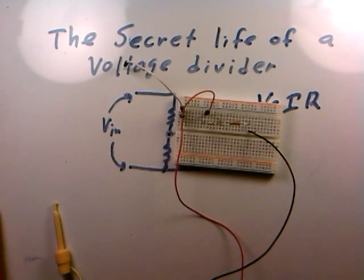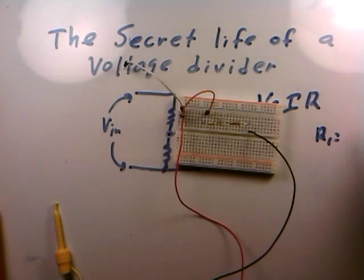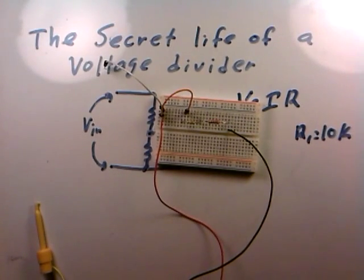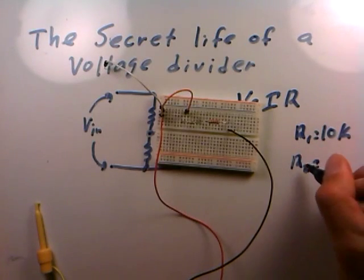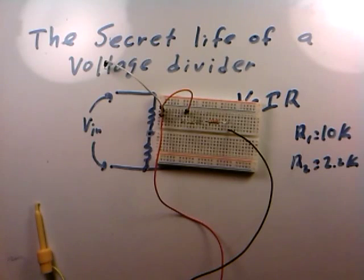Resistor one is a 10k—brown, black, orange band—so my R1 equals 10k. The R2 I'm using is red, red, red, so it's 2.2k.